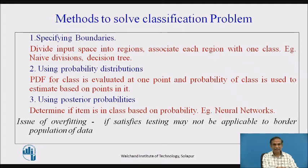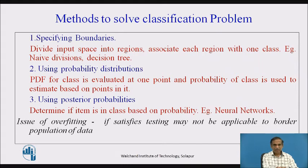The methods to solve the classification problem include specifying boundaries, dividing the space into regions, and associating each region with one class — used in naive division and decision trees. A second method uses probability distribution functions evaluated at one point to estimate class probability. A third method uses posterior probabilities to determine if an item belongs to a class, as used in neural network classifiers.